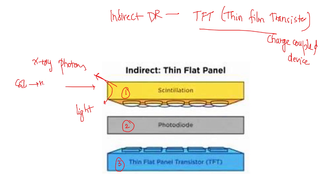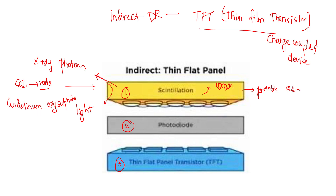Cesium iodide is preferred because it is formed in rods. Alternatively, gadolinium oxysulfide can also be used. Whenever there is more light spread, a thinner layer is used with reduced detection efficiencies. This scintillation layer phosphor is cheaper to produce and is more robust, making it more suitable for portable radiography. The scintillation layer is laid down as a crystalline structure just above the photo diode, placed perpendicular to the detector.